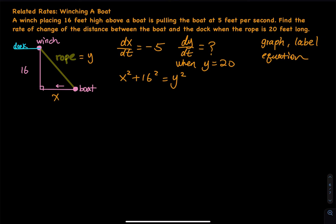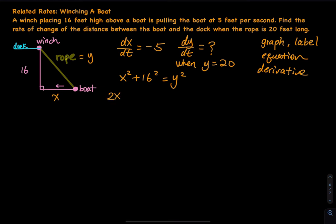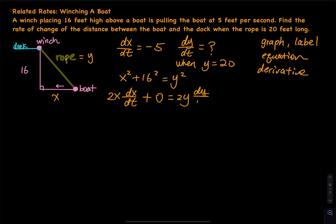Then you have to use the derivative, because we need to find the rate of change. You have to use implicit differentiation — take the derivative of the entire equation with respect to time t. So we get 2x times dx/dt, plus 0 (since the derivative of 16 squared is 0), equals 2y times dy/dt.